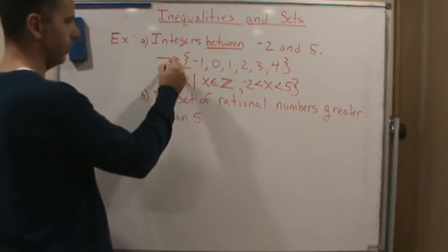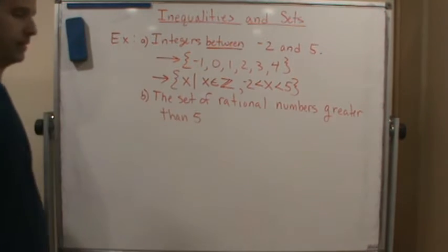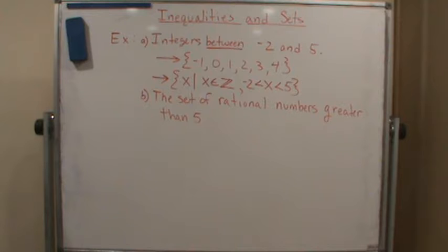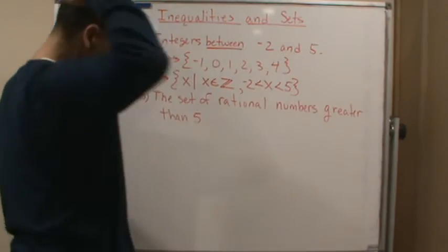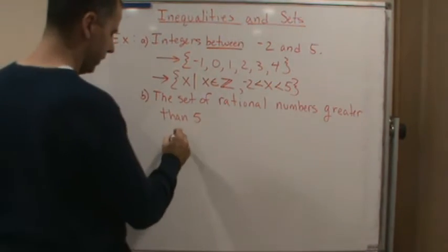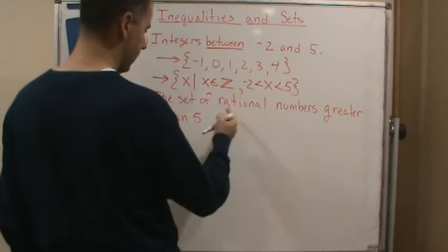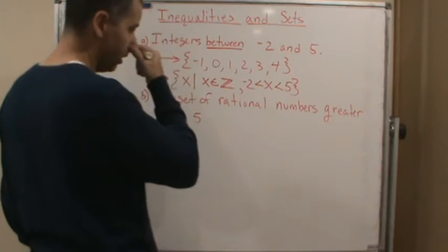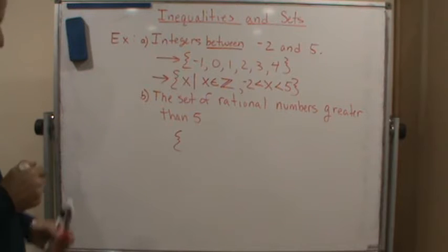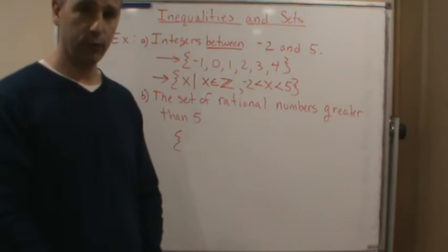Now what about b? We want the set of all rational numbers greater than 5. If I want to use the list method, then again I'm going to make my curly brace. Now I want a set of rational numbers greater than 5. Well, in this case the roster method would not work out very well.